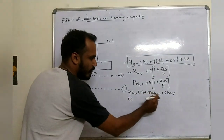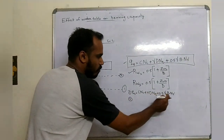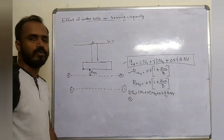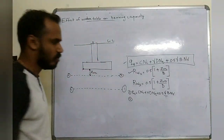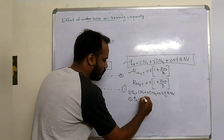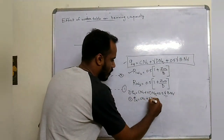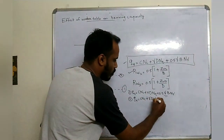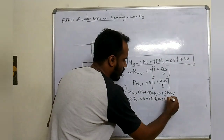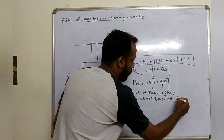In this equation we have three terms. The ultimate bearing capacity with correction is: Q is equal to c·Nc plus gamma·D·Nq plus 0.5·gamma·B·N-gamma multiplied by Rw2.